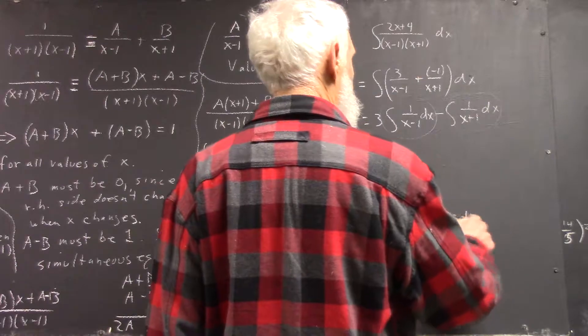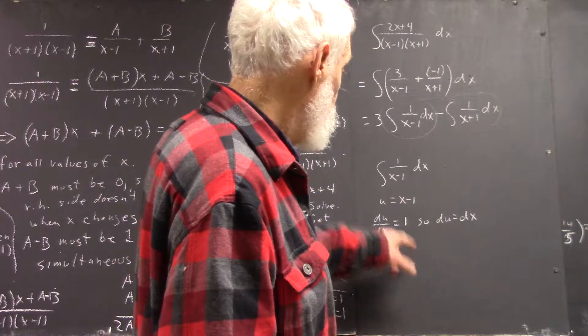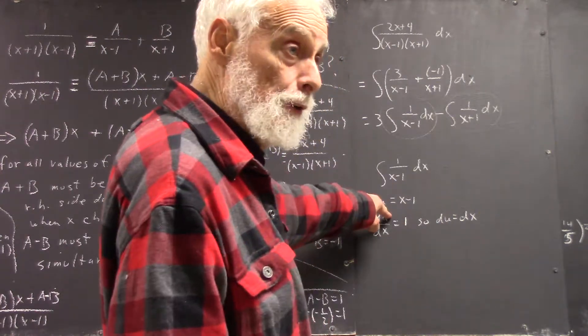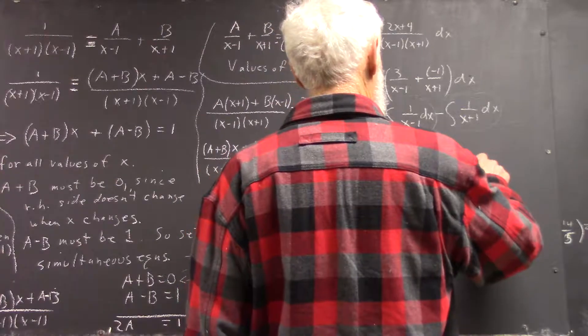So du and dx are the same, so that I can replace dx by du and I can replace x minus 1 by u. So this is going to be the integral of 1 over u du.